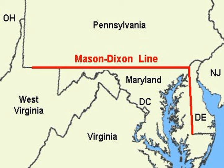A lot of these lines on maps, which we kind of allowed to shape our conception of the world, are basically made up. They were invented by somebody at some point, and you can imagine parallel timelines in which the lines went somewhere else.